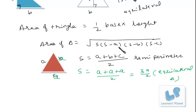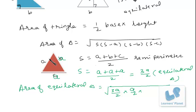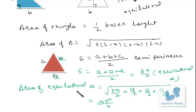Now just put the value of s and a, b, c in the area formula. Area of equilateral triangle: s = 3a/2, so 3a/2 − a = a/2. Since b = a and c = a for an equilateral triangle, 3a/2 − a = a/2 for each term. So under the square root we get (3a/2)(a/2)(a/2)(a/2), which gives us a⁴ / 16 times 3 under the square root. After taking the square root, it becomes a² / 4 times √3. So the formula for area of an equilateral triangle is √3 a² / 4, where a is the side of the equilateral triangle.